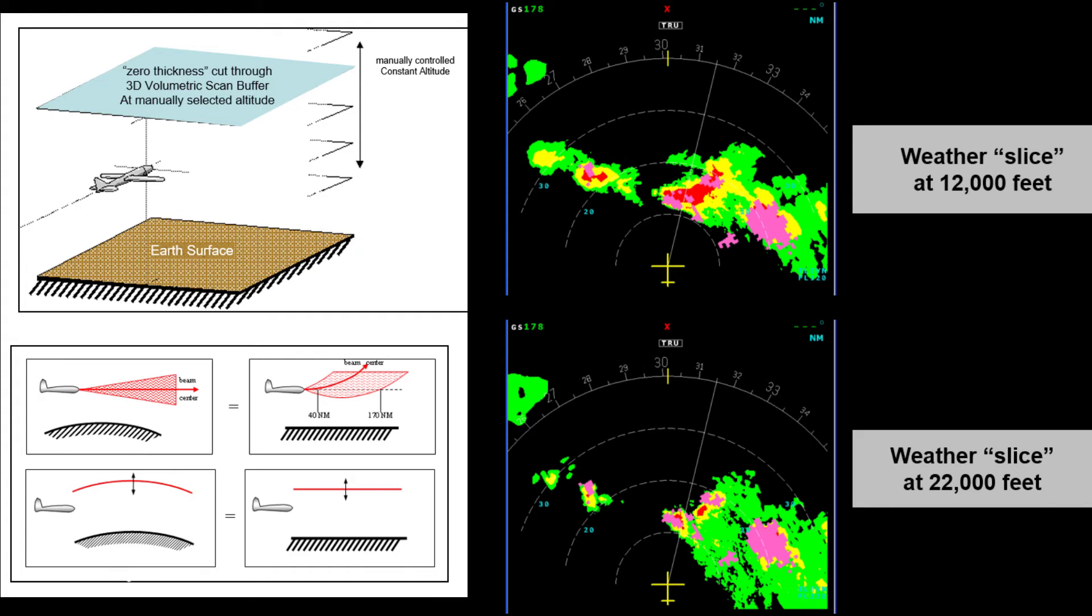When the pilot enters this mode, the initial altitude slice shown is at the aircraft's current altitude. Slices can then be selected from 0 to 60,000 feet in 1,000-foot increments. If the aircraft climbs or descends, a selected altitude slice will still be shown.